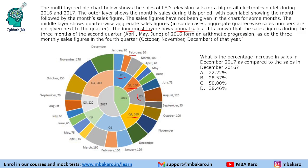It is known that the sales figures during the three months of the second quarter — April, May, June — form an arithmetic progression. And the three monthly figures in the fourth quarter of that year are also in AP. So these two cases are of AP for 2016.